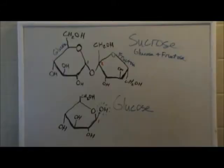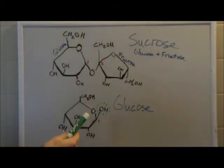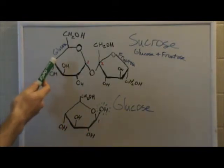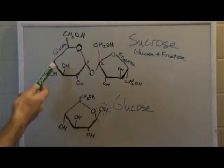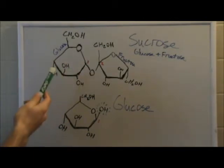Good question, let me show you. Here we have drawings of sucrose and glucose. On the number one carbon of glucose, there is an OH group that is free to react. This makes glucose a reducing sugar. Sucrose, on the other hand, is non-reducing — the reactive OH group on the glucose has already reacted with the fructose, forming a larger molecule.